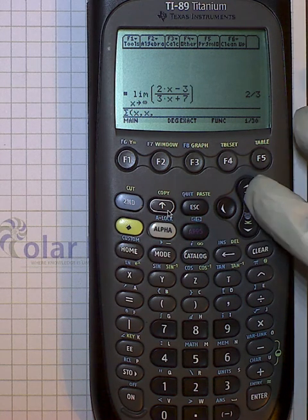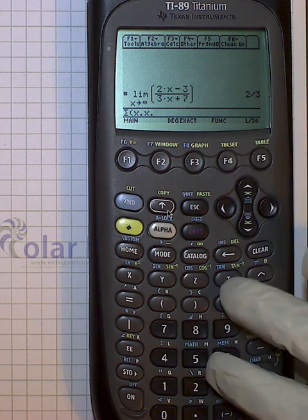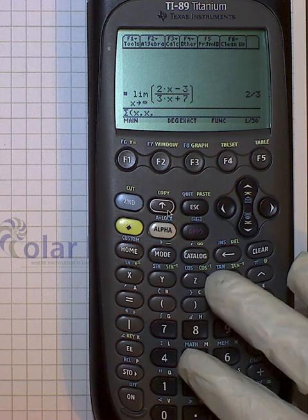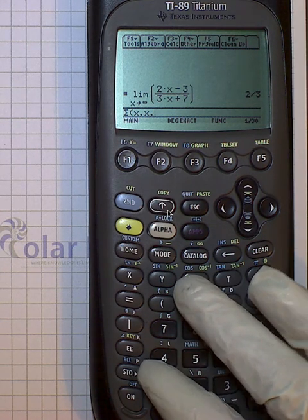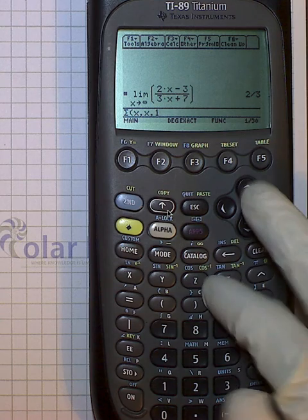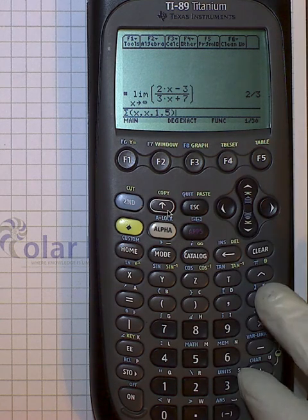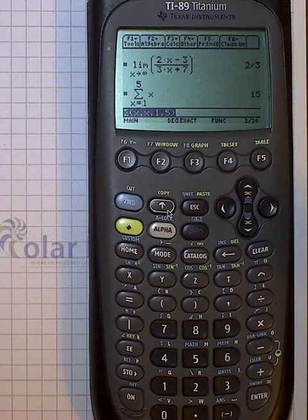All right, so we said we're going to add the integers from one to five, so one comma five, and I already know that that sum is 15, so no surprise.